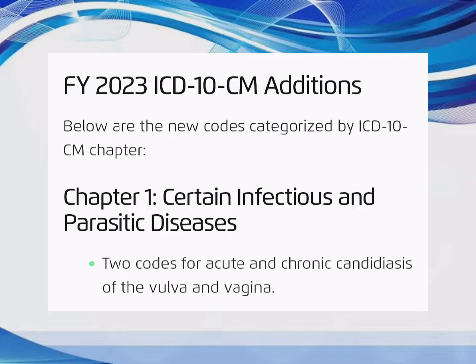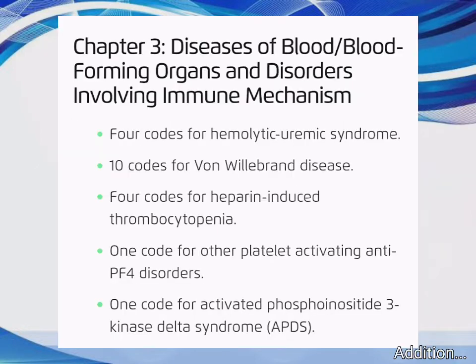FY 2023 ICD-10-CM additions are categorized by chapter. Chapter 1 – Certain Infectious and Parasitic Diseases: 2 codes for Acute and Chronic Candidiasis of the Vulva and Vagina. Chapter 3 – Diseases of Blood, Blood-forming Organs and Disorders Involving Immune Mechanism: 4 codes for Hemolytic Uremic Syndrome, 10 codes for Von Willebrand Disease, 4 codes for Heparin-Induced Thrombocytopenia, 1 code for Other Platelet-Activating Anti-PF4 Disorders, and 1 code for Activated Phosphoinositide-3-Kinase-Delta Syndrome (APDS).